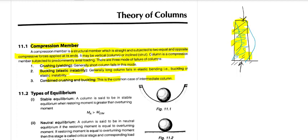Now let us look at the types of equilibrium. If we have a curved surface and place a circular sphere on it, when it is displaced and can be restored to its original position — that is stable equilibrium. A column is said to be in stable equilibrium when the restoring moment is greater than the overturning moment.